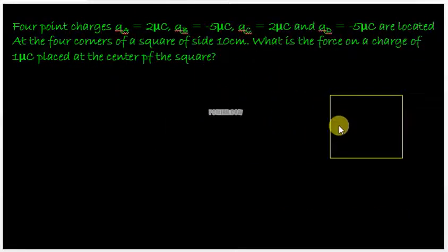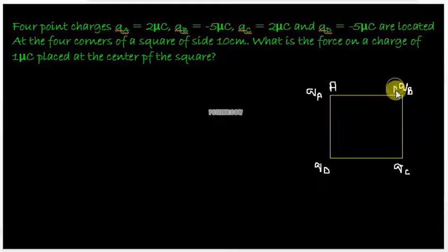In this video we have a numerical for you which says that four point charges QA that is 2 micro coulomb, QB that is minus 5 micro coulomb, QC which is minus 2 micro coulomb, and QD which is minus 5 micro coulomb are located at the four corners of a square A, B, C and D.